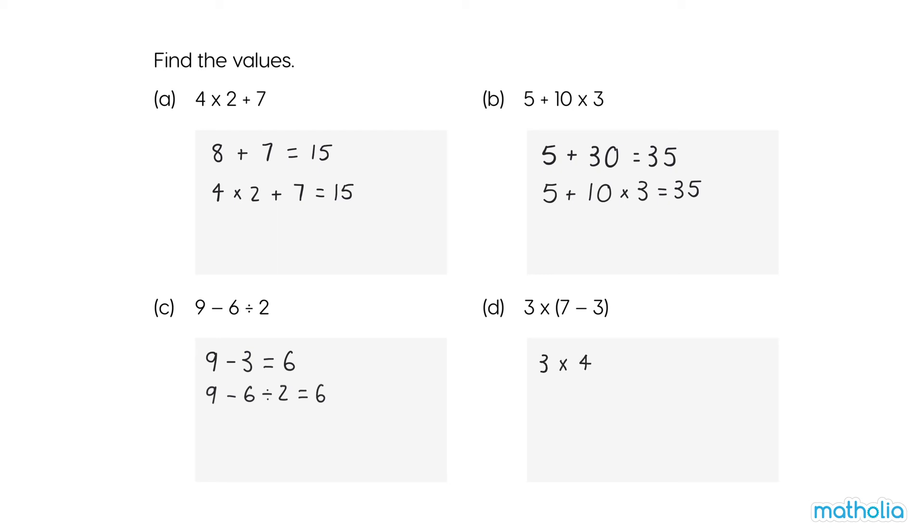3 times 4 equals 12. So, 3 times open parenthesis 7 subtract 3 close parenthesis equals 12.